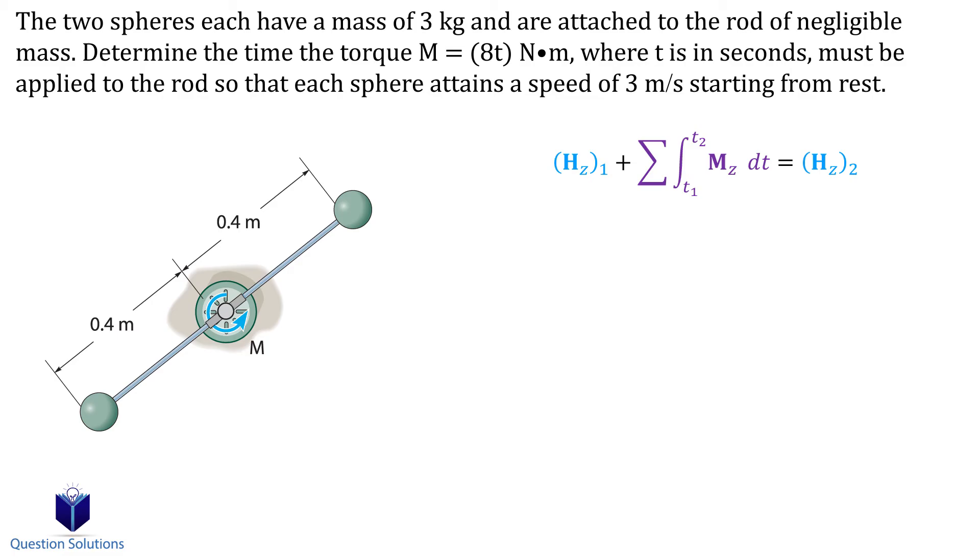Which we can see because it's a top-down view given to us. So for the initial momenta, we have a length of 0.4 meters multiplied by the mass of the sphere multiplied by its initial velocity, which is 0 since it's starting from rest. We have 2 spheres, so we can multiply all of this by 2.